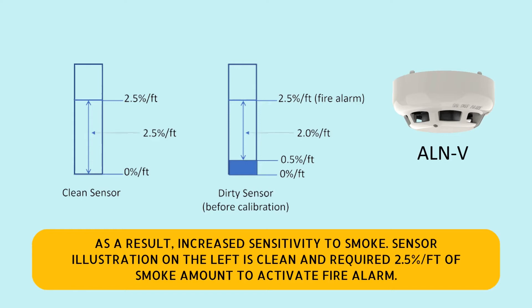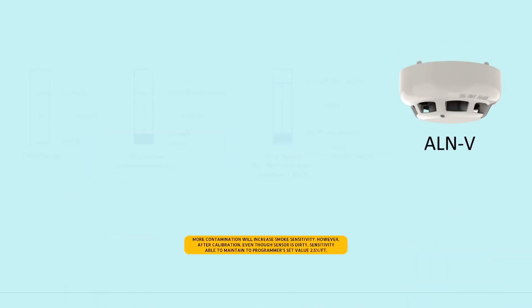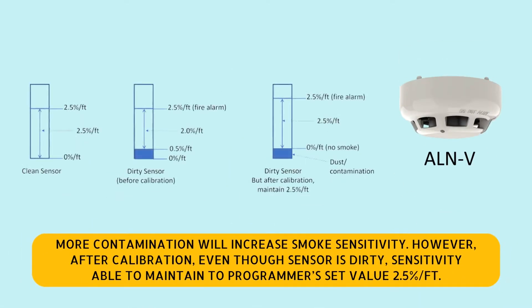The sensor illustration on the left is clean and requires 2.5% per foot of smoke to activate the fire alarm. The sensor illustration on the right requires only 2.0% per foot. More contamination will increase smoke sensitivity. However, after calibration, even though the sensor is dirty, sensitivity is able to maintain the programmed set value of 2.5% per foot.